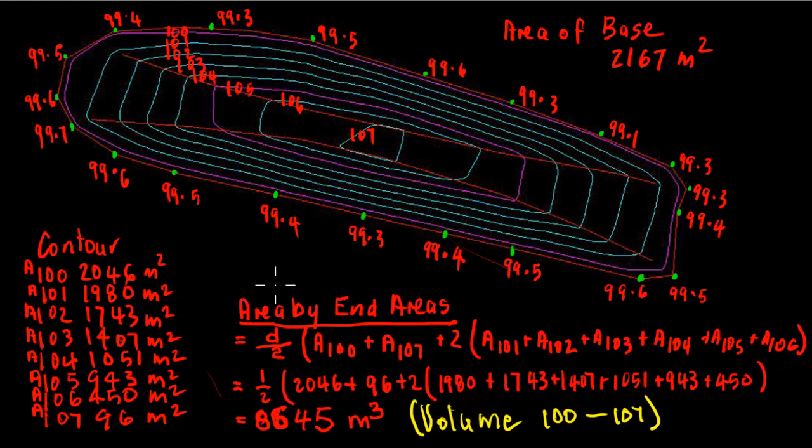Now you'll note that that is from the 100 contour, but you'll see from these values around here that there's a little bit of material between the base and the 100 contour that we need to account for, and it's not accounted for in this formula here, the end area formula.